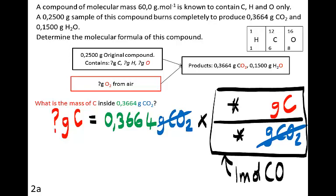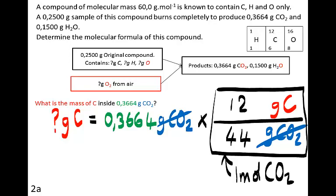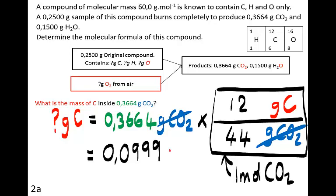We use a conversion factor with grams of carbon dioxide at the bottom to cancel it, and grams of carbon at the top. Both top and bottom must refer to equivalent amounts — one mole of carbon dioxide. One mole of carbon dioxide has a mass of 44 grams (12 for carbon, 2 times 16 for oxygen), and 12 of those grams are contributed by the carbon. So 0.3664 times 12 divided by 44 equals 0.0999 grams of carbon.